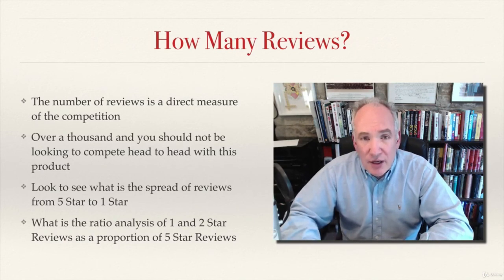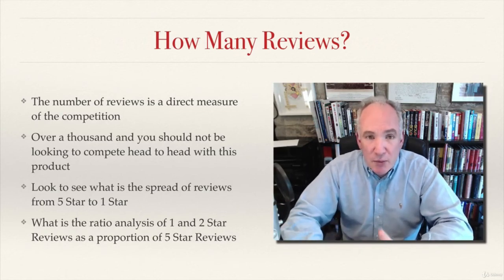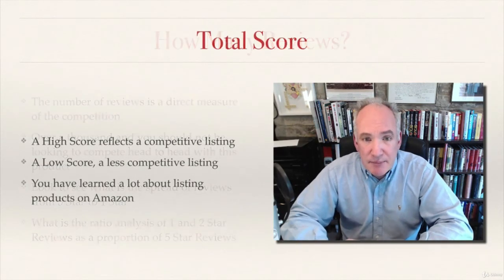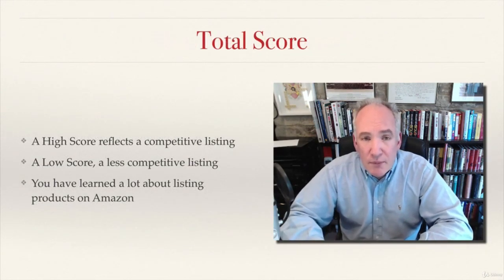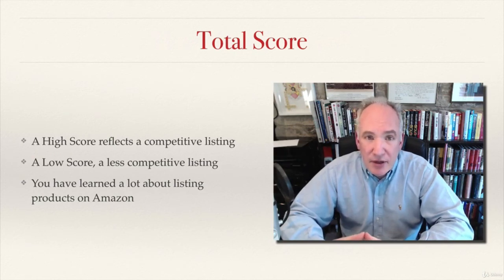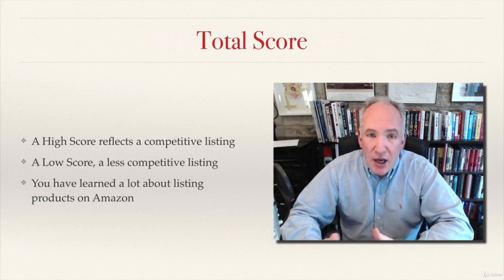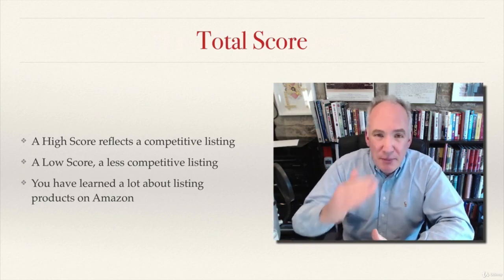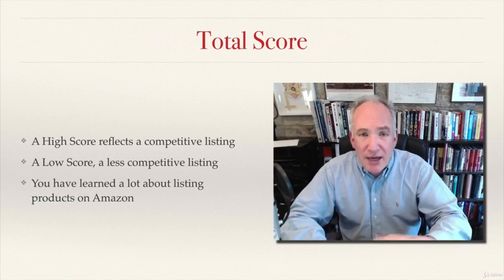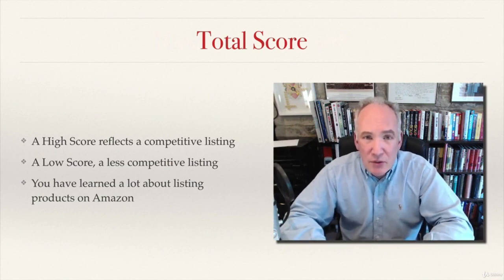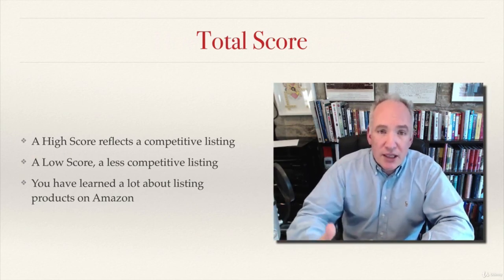We can also use reviews to our advantage by going in and looking at them in detail to see what's being said about the product — good, bad, ideas, customer feedback. For now though, we're just doing a numerical analysis. When you add up the total score in the scorecard, a high score reflects a competitive listing and a low score reflects a less competitive one. Going through this process systematically will help you uncover all the important issues in an Amazon listing.